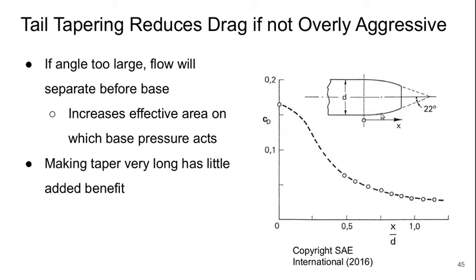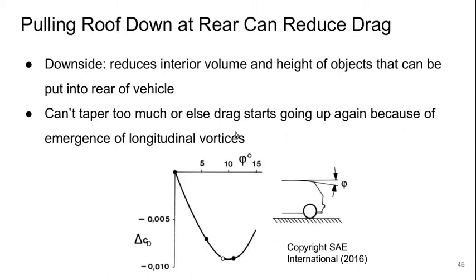Looking at the vehicle from a top-down view, tapering the tail can reduce drag if not done too aggressively. If the taper angle is too large or the tapered section too short, the flow separates before reaching the base, increasing the effective area on which base pressure acts. Making the taper very long provides little extra benefit, which is why we don't see long pointy tails. Additionally, pulling the roof downward at the rear can reduce drag in the right range, but reduces interior volume. The roof can only be tapered a limited amount before longitudinal vortices emerge and drag increases again.